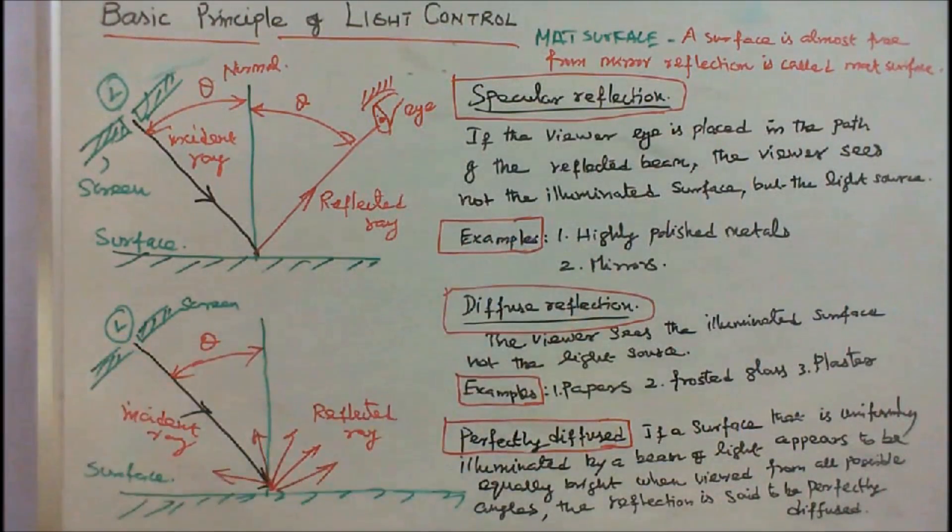Examples are highly polished metal, number two, mirrors. Second is diffuse reflection. This is a figure of diffuse reflection.